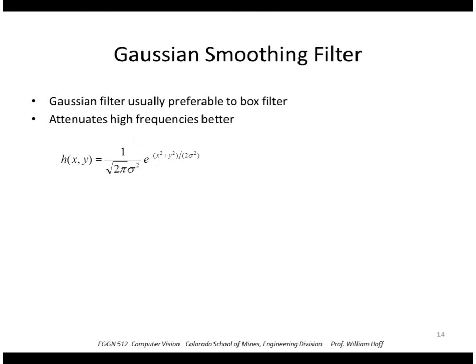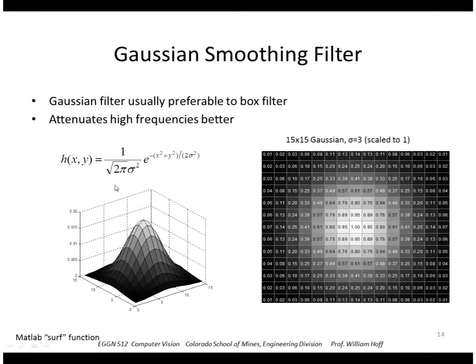And this is a normalizing constant so that the sum of all the values equals 1. In MATLAB, if we created a 15 by 15 Gaussian using this function with a sigma of 3, and such that the center is a 1, so we don't really have this constant here, this is what it would look like. And this is what it would look like if we plotted it as a surface.